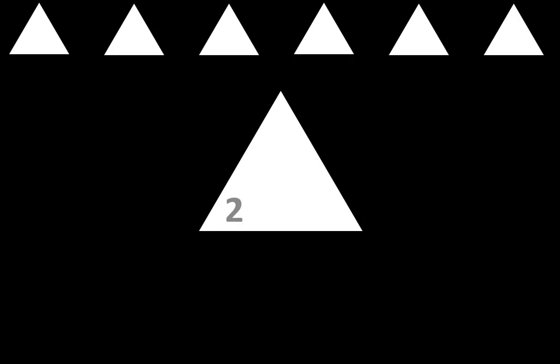On your paper you have six rows of triangles. We'll fill each triangle in with two factors and a product. Let's begin with the top row — I'll read each one to you so you can copy it onto your paper, and I'll also show you each one in a larger triangle. The first one is 2 times 2 is equal to 4. The next one is 2 times 3 is equal to 6.